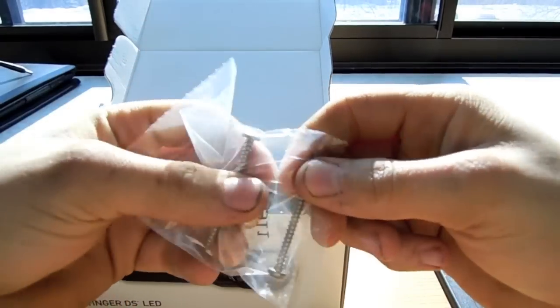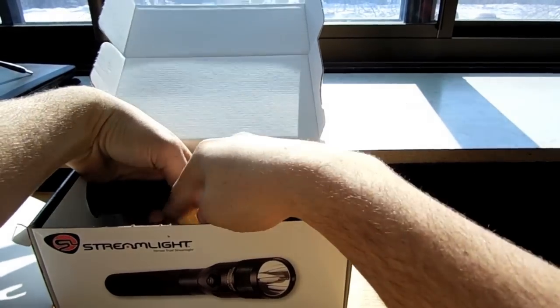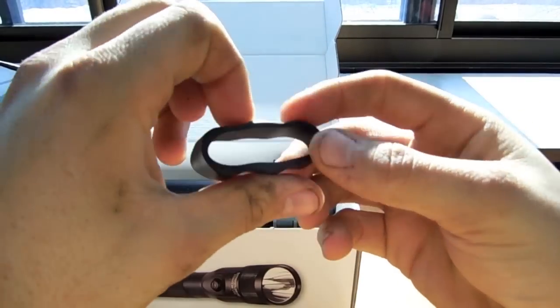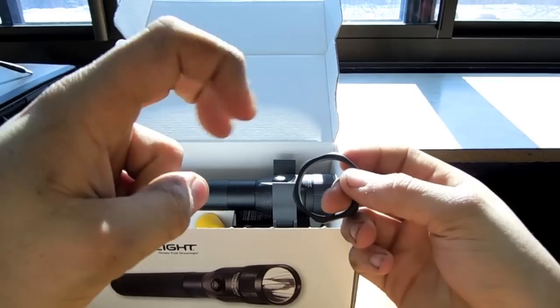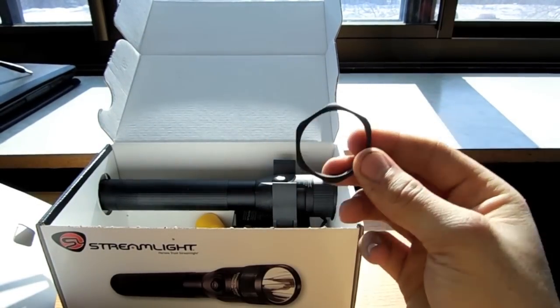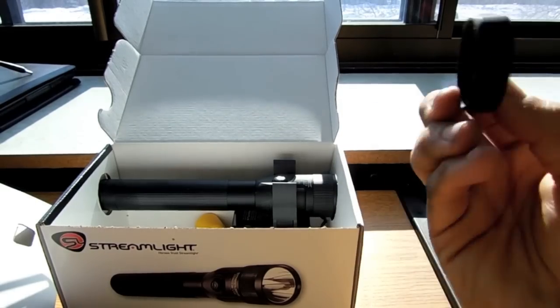You gotta get all the boring stuff out of the way first. You have an anti-roll ring. Sometimes people call it a tactical suppressor. It pretty much means that if you smash somebody in the head with it, it's gonna be a little bit softer. It's gonna knock them out.